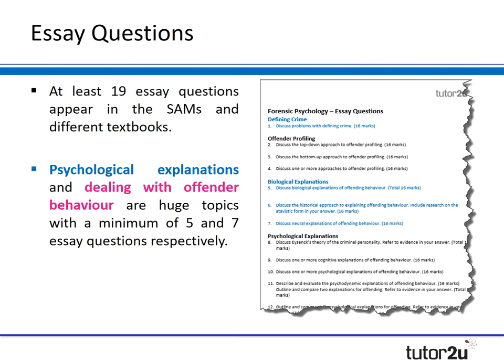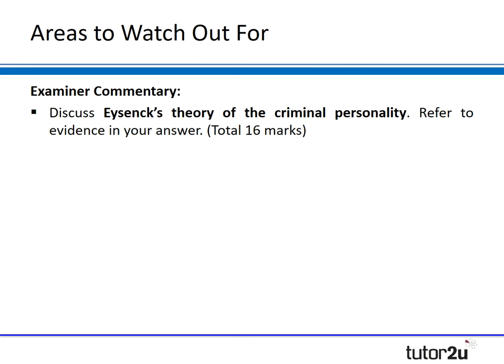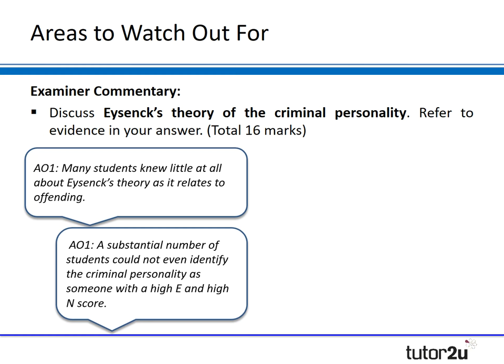As a topic that has been taught previously, we can learn a lot from the examiner commentary. There are areas where we can pick up on the typical mistakes students have made. Looking at the question 'Discuss Eysenck's theory of criminal personality and refer to evidence in your answer,' the examiner said that many students knew little about Eysenck's theory as it relates to offending — the key being as it relates to offending. Students know the questionnaire but don't know which traits are associated with criminal personality.